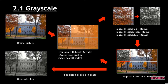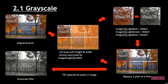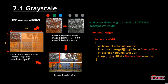For grayscale, we have the original picture and we go through a for loop with height and width, then access each pixel by image[i][j]. For each pixel we have the red, green, and blue values. Grayscale means adding all red, green, and blue values and dividing by three, then setting red, green, and blue equal to that average value. We replace them one by one until the entire image is filtered.